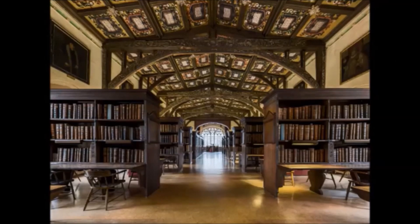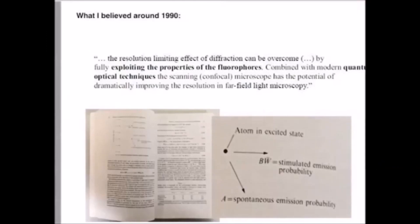We show here the crucial page which allowed Dr. Hell to find a way to avoid the Abbe limit. In his words, the resolution limiting effects of diffraction can be overcome by combining the properties of fluorescent compounds combined with modern quantum optical techniques.